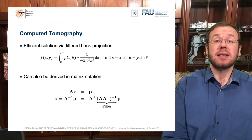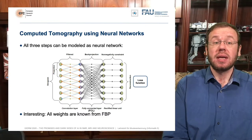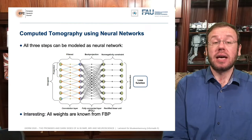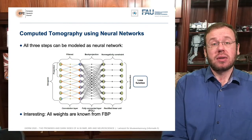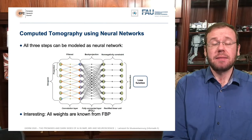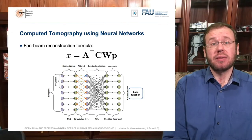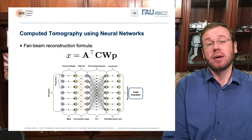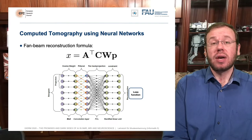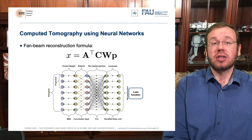To implement filtered back projection as a neural network: you have a convolutional layer — the filter — a back projection that is a fully connected layer, and then non-negativity constraints. This is the parallel beam reconstruction algorithm. We already know all of the weights from filtered back projection, so we don't need to train anything here. But we can expand this for fan beam problems, which require an additional multiplicative cosine weight, and for short scans which include so-called Parker weights — essentially a matrix of pointwise multiplications.